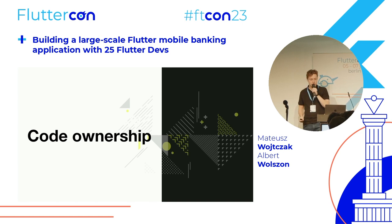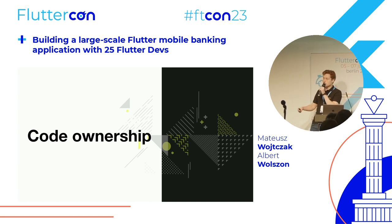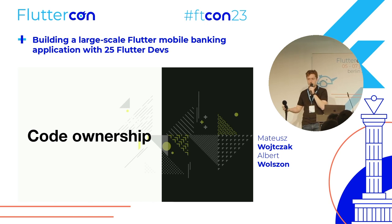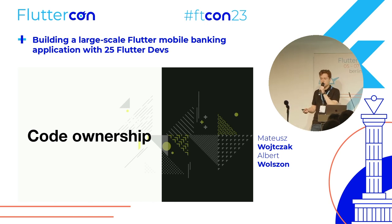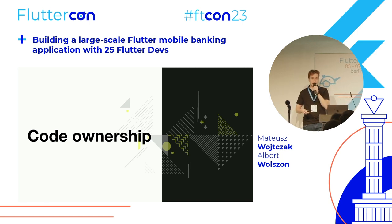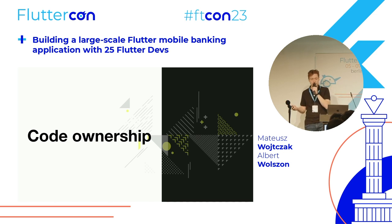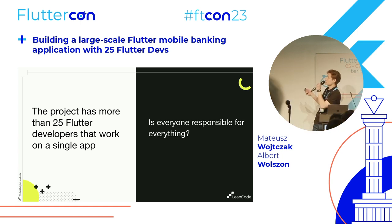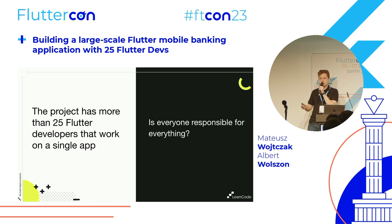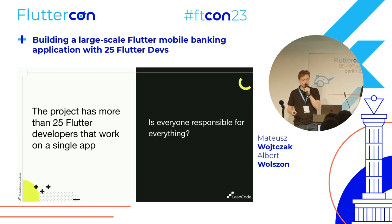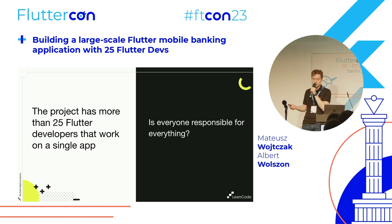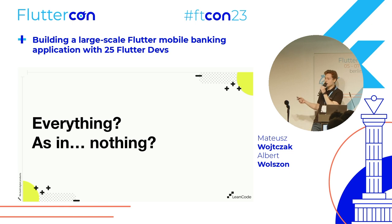Let's start with the first concept: code ownership. It's a seemingly simple thing, because in small projects it's pretty simple and implicit. There's a single team that contributes to a single code base — they create it, own it, maintain it, develop new features, fix bugs, and everyone knows everything. But if your project has more than 25 Flutter developers working on a single app in a single mono repo, is everyone responsible for everything? Basically, everything means nothing.